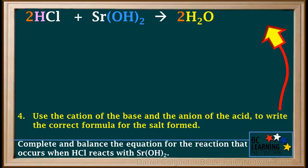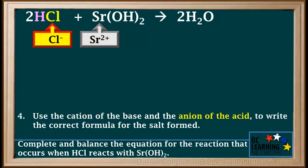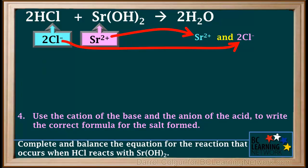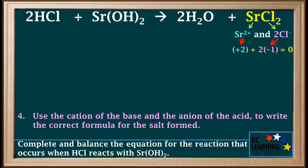Neutralization forms water and a salt. We'll use the cation of the base and the anion of the acid to come up with the correct formula for the salt formed in this reaction. The base is Sr(OH)₂, so the cation of the base is Sr²⁺. The acid is HCl, so the anion of the acid is Cl⁻. Because HCl has a coefficient of 2, there are two Cl⁻ ions to make the salt. One Sr²⁺ ion and two Cl⁻ ions form the compound SrCl₂, or strontium chloride. The charges on one Sr²⁺ and two Cl⁻ ions add up to zero, so this verifies that SrCl₂ is the correct formula.